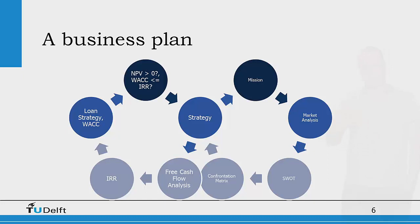If not, you need to adjust the strategy, which means you need to take another look at your mission, your market analysis, your SWOT. And so you will go through this figure eight a couple of times to come up with the best strategy for your company and the way you want to run a business. That doesn't mean it has to be the same as another group's, and it also does not mean that there is one best strategy — but you will need to fine-tune what you are doing and prove to Mr. Jones that it's worth doing.